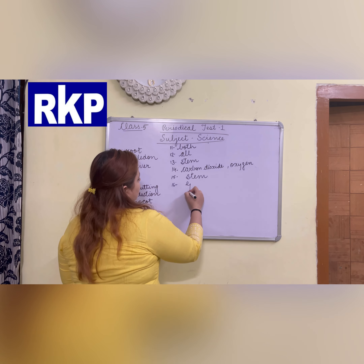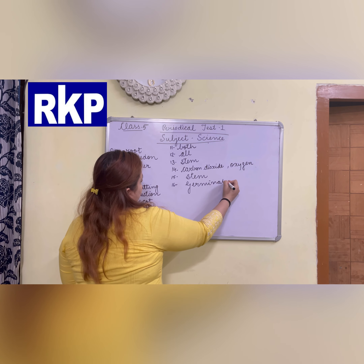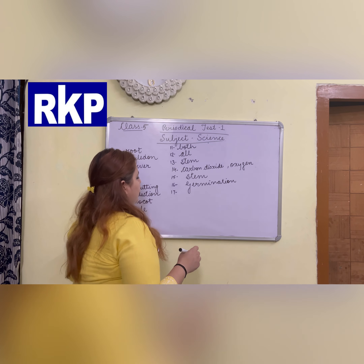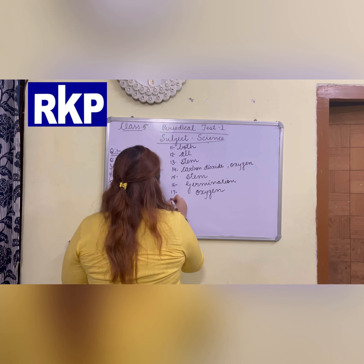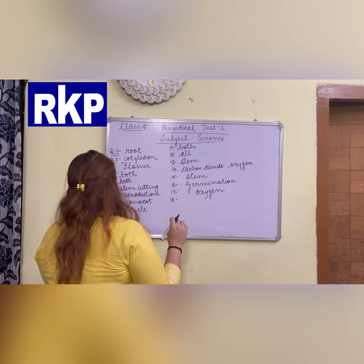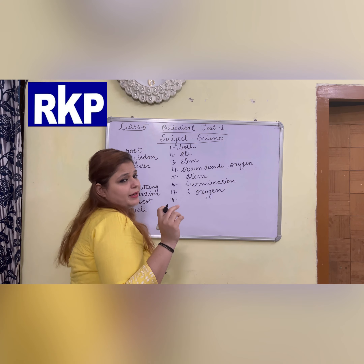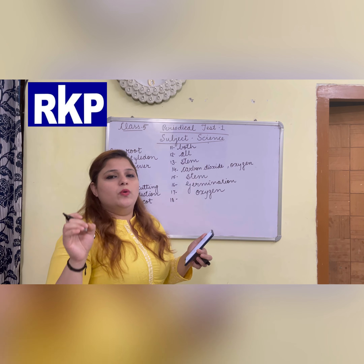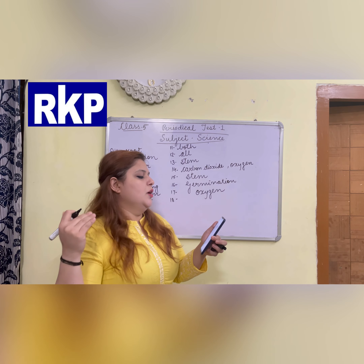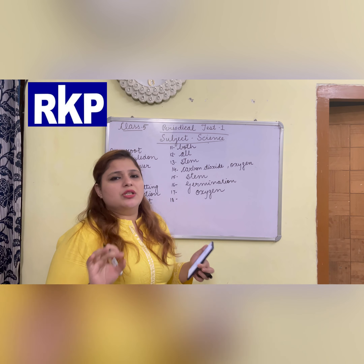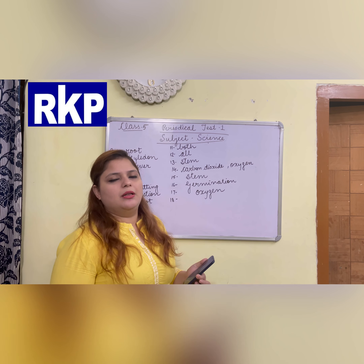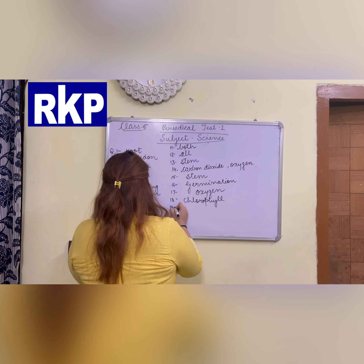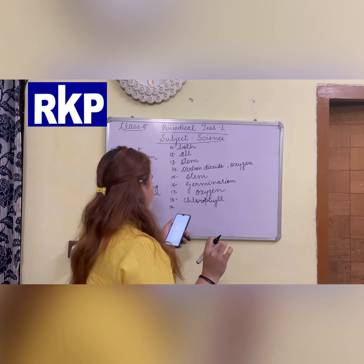Next: what do we call the process of development of a seed into a seedling? The answer is germination. Next: living organisms need what gas to survive? The answer is oxygen. Next: what is present in plants which enables them to prepare food by trapping sunlight? This question asks what is present in plants that helps them trap sunlight. The answer is chlorophyll.